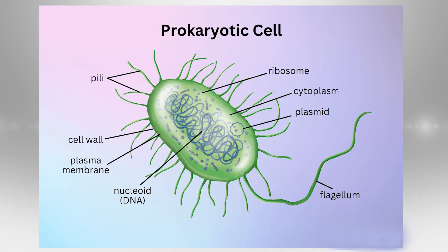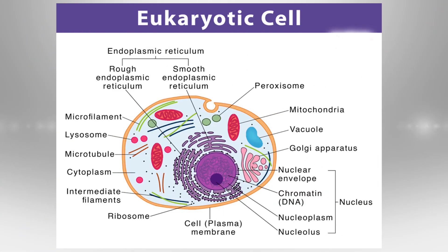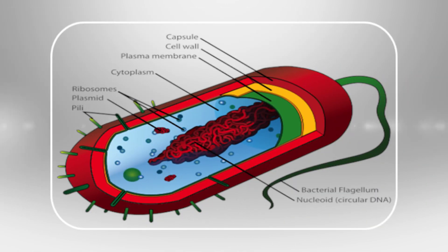Various types of cells were studied. Prokaryotic cells are simple cells without a nucleus or membrane-bound organelles; bacteria and archaea are examples. Eukaryotic cells are complex cells with a nucleus and membrane-bound organelles; plants, animals, fungi, and protists are examples. A figure has been shown illustrating all these components for both eukaryotic and prokaryotic cells.